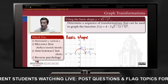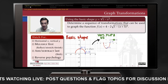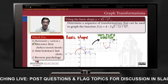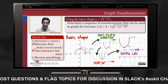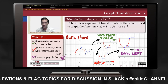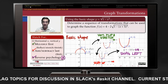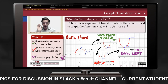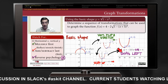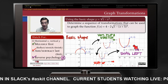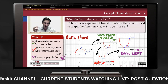Graph transformations help us graph complicated functions starting from a simpler basic shape. Transformations come in two flavors: multiplications — done first — that can reflect, stretch, or shrink the graph; and additions/subtractions — done last — that shift the graph's location. Operations applied outside the expression have a vertical effect; operations applied directly to x have a horizontal effect. The x effects can be counterintuitive: replacing x with x+5 shifts the graph left by 5 units.